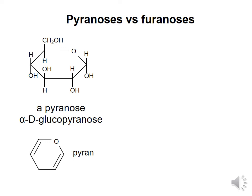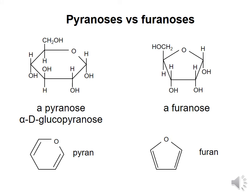Five-membered monosaccharide rings, such as ribose, resemble the molecule furan and are called furanoses. So in its cyclic structure, ribose could be referred to as alpha-D-ribofuranose.